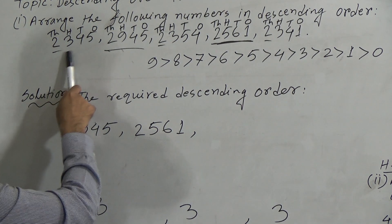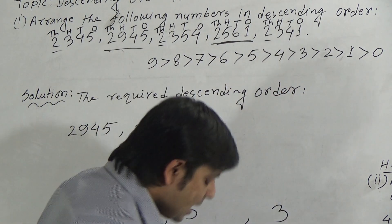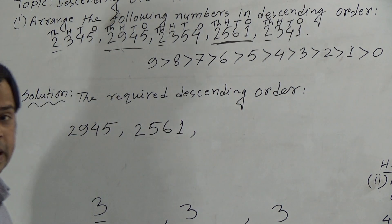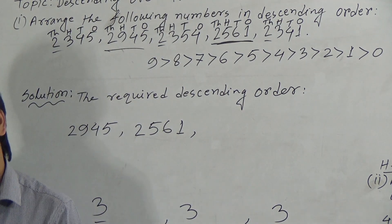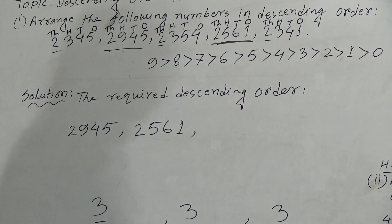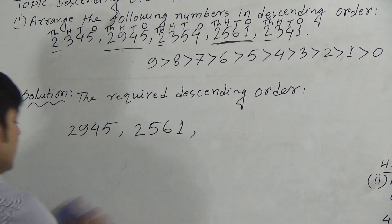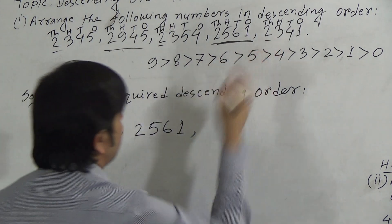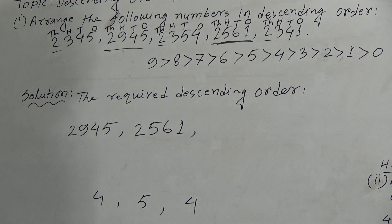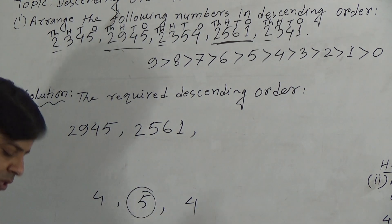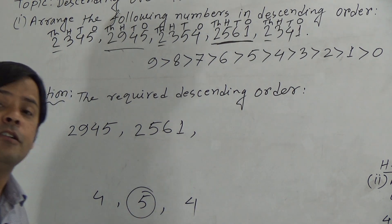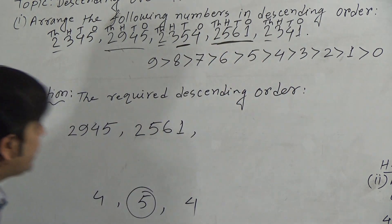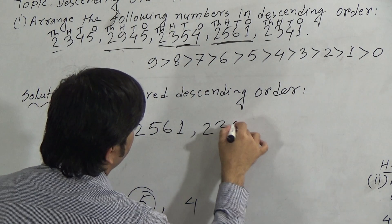Among these three remaining numbers — 2,345, 2,354, and 2,341 — the thousands position is the same and the hundreds position is also the same; all contain 3 in the hundreds position. So we move to the tens position. The tens digit of 2,345 is 4, the tens digit of 2,354 is 5, and the tens digit of 2,341 is also 4. Since 5 is the largest, the number containing 5 in the tens position is the largest. So we write 2,354 next.